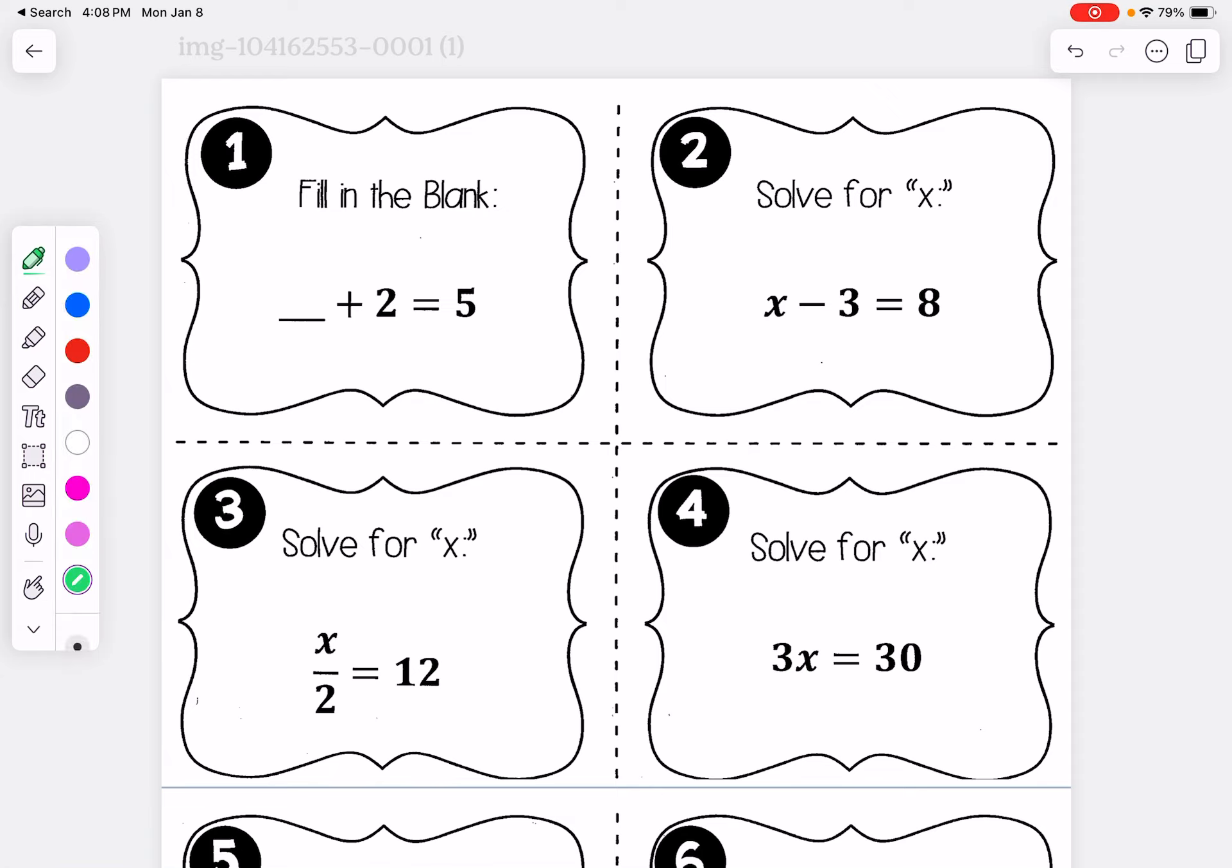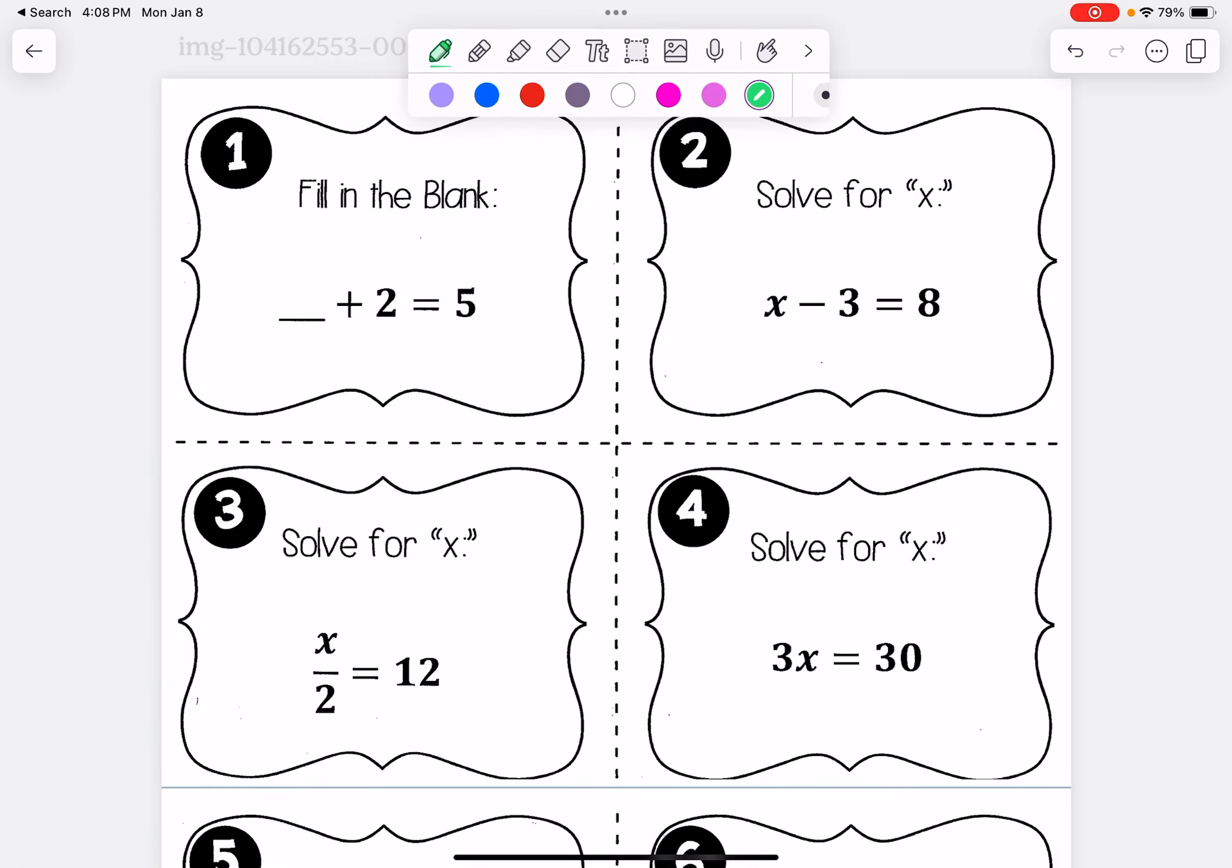So number one, if you can't figure this one out, hopefully you know 3 plus 2 is 5. And that's the basic idea for what we're doing when we solve these equations. For this next one, we'll just add 3 to both sides. We have x equals 11. Pretty easy so far.